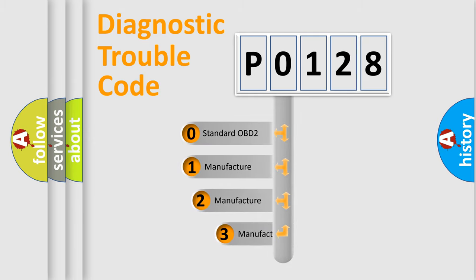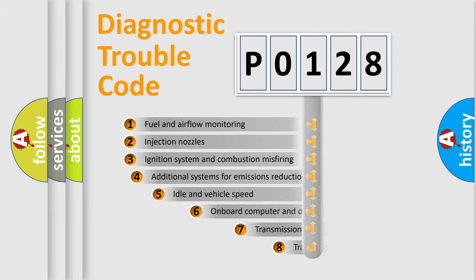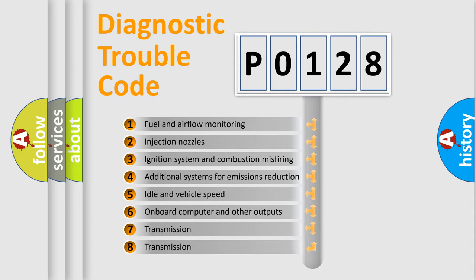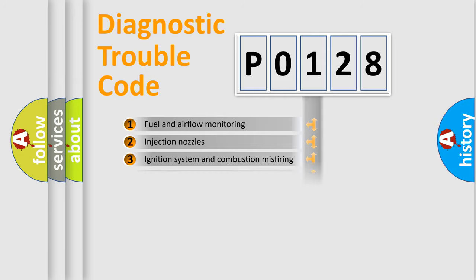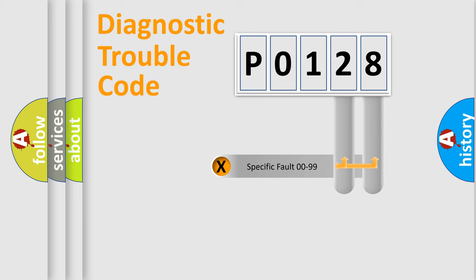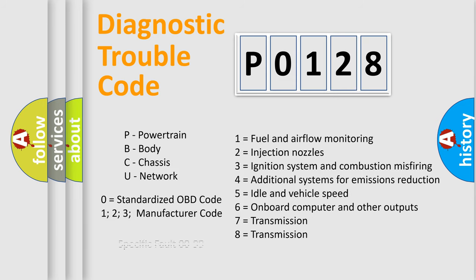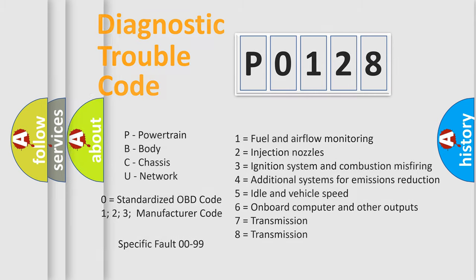If the second character is expressed as 0, it is a standardized error. In the case of numbers 1, 2, or 3, it is a more specific expression of a car-specific error. The third character specifies a subset of errors. This distribution is valid only for the standardized DTC code. Only the last two characters define the specific fault of the group, and such a division is valid only if the second character code is expressed by the number 0.